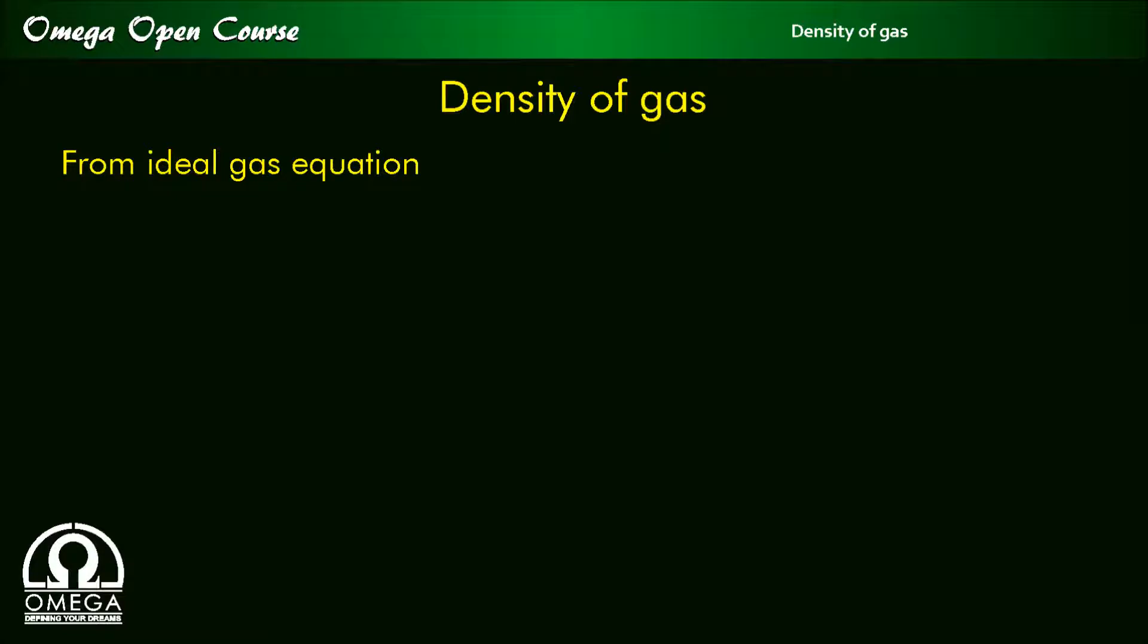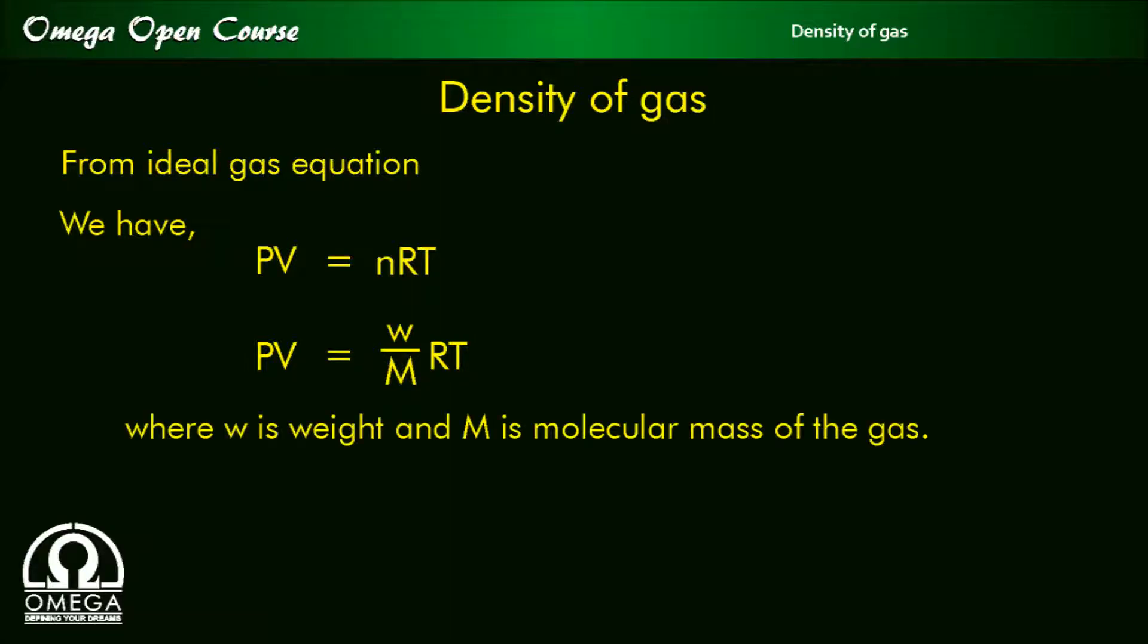From ideal gas equation, we have PV equals nRT, or PV equals w by M into RT, where w is weight and M is molecular mass of the gas.